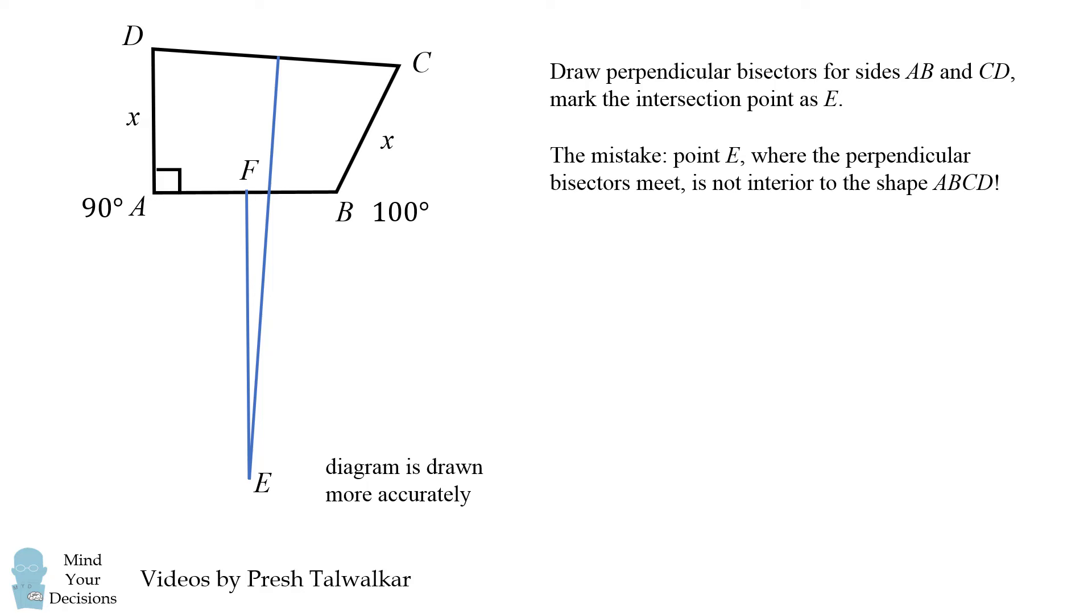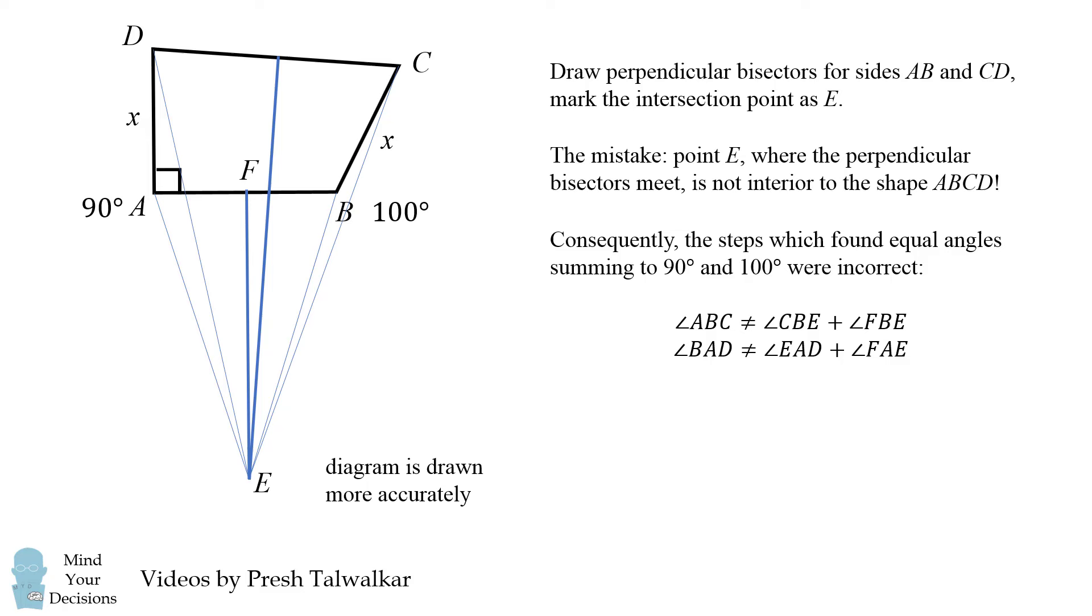But why does this little detail matter? Well let's connect E to ABCD. The consequence that E is on the exterior is that the steps where we found equal angles summing to 90 and 100 degrees were incorrect.